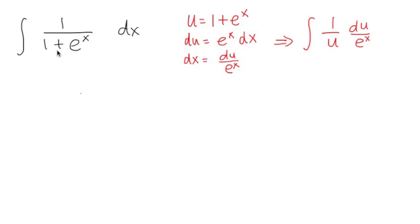That u equals 1 plus e to the x, and then as the usual procedure, du equals e to the x dx, dx equals du over e to the x. And then take this integral into the u world, I will get 1 over u, and then dx becomes du over e to the x.